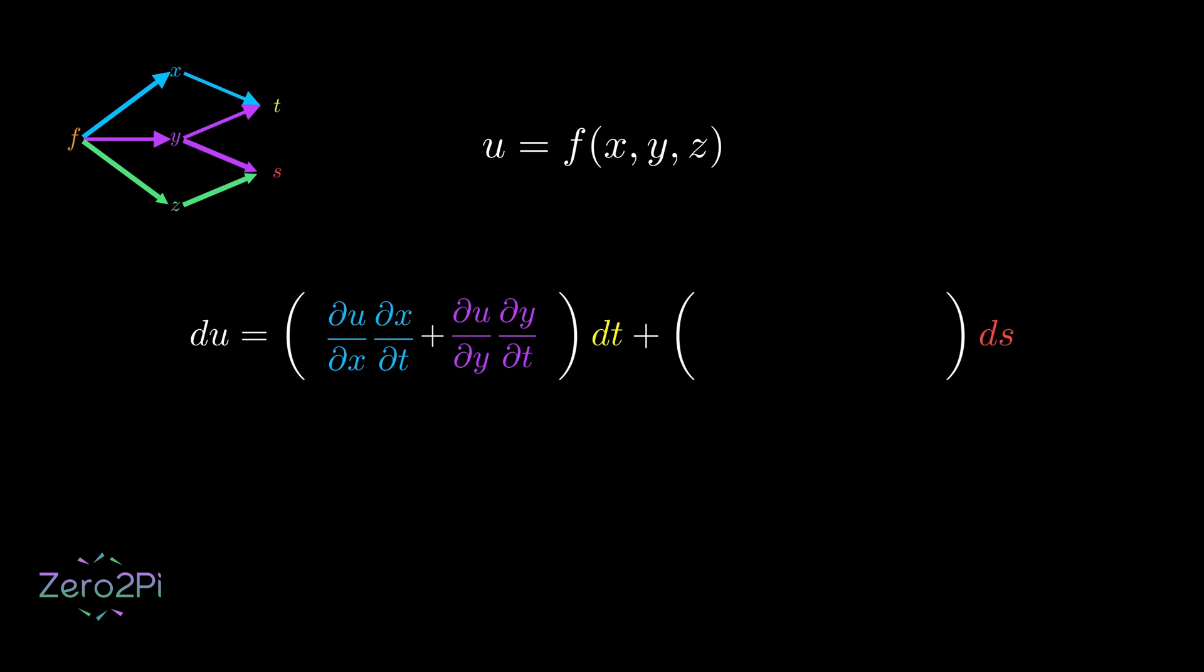writing partial makes perfect sense since y depends on both t and s. Now, for the s part, we trace the paths to s. u changes with y and y changes with s. That gives us ∂u/∂y times ∂y/∂s. And u changes with z and z changes with s. So, we add ∂u/∂z times ∂z/∂s. And that's it.